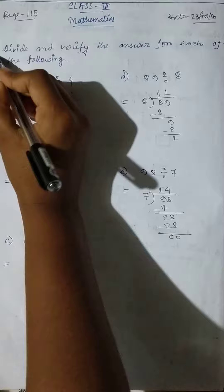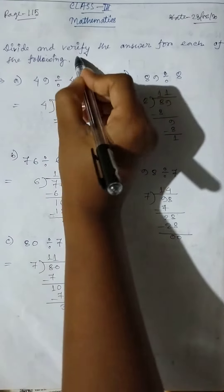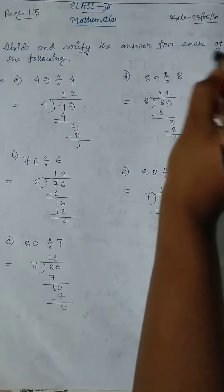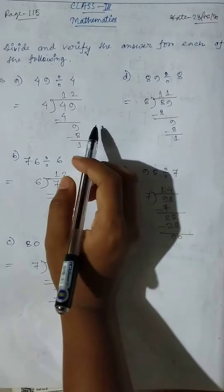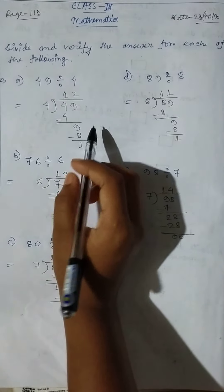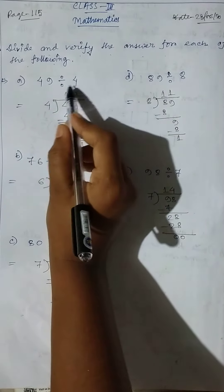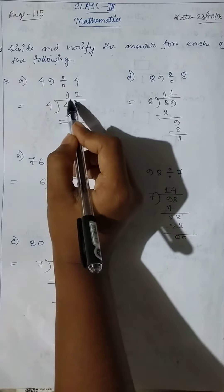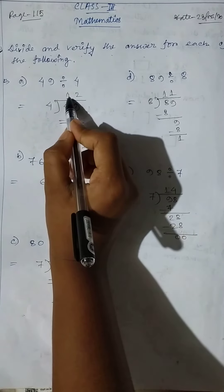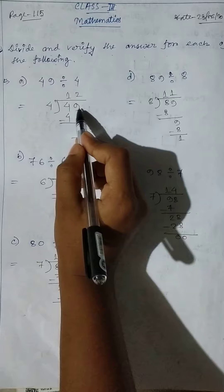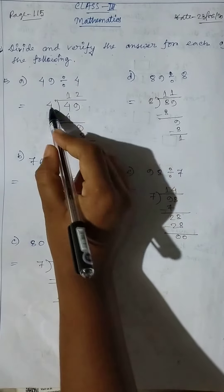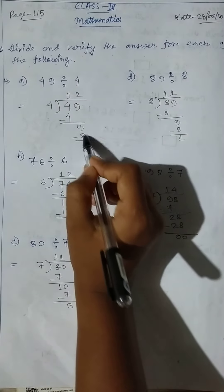Question number 3: divide and verify the answer for each of the following. First, 49 divided by 4. 4 ones are 4, 9 here, 4 twos are 8, so 9 minus 8 equals 1. So here, quotient 12 and remainder 1.